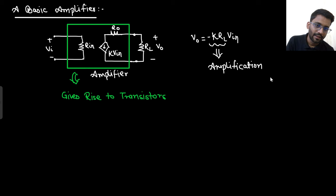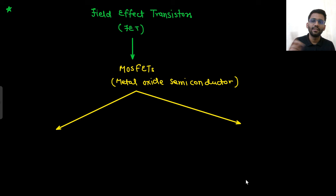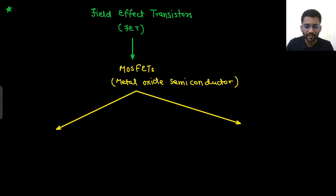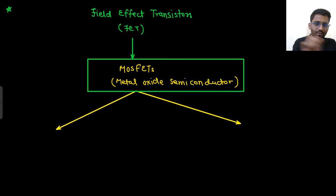This kind of amplifier can be made using three-terminal or four-terminal devices. Three-terminal devices include BJT — bipolar junction transistor. Four-terminal devices include JFET and MOSFET, where MOSFET stands for metal oxide semiconductor field effect transistor. We will study MOSFETs first, as they are the most important.